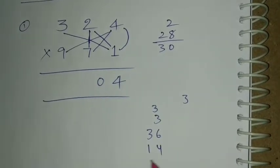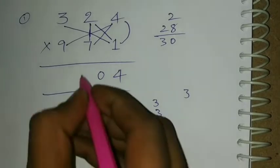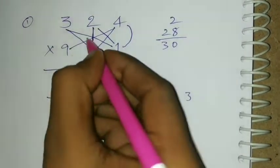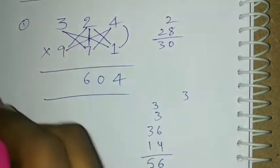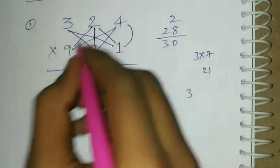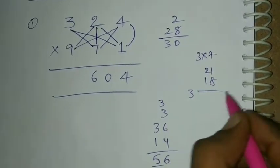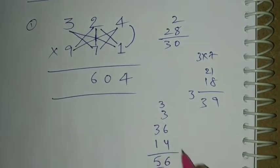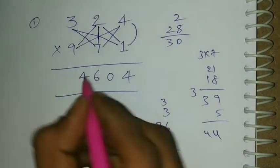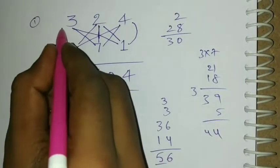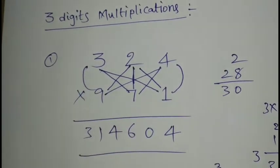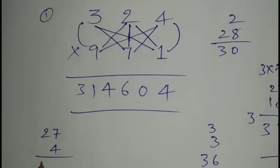3, 36 plus 50 is 56. 6, 5 carry. Next friends, 7 plus 5 carry is 44. 4, 4. Next last 3 into 9 is 27 plus 4 carry is 31.